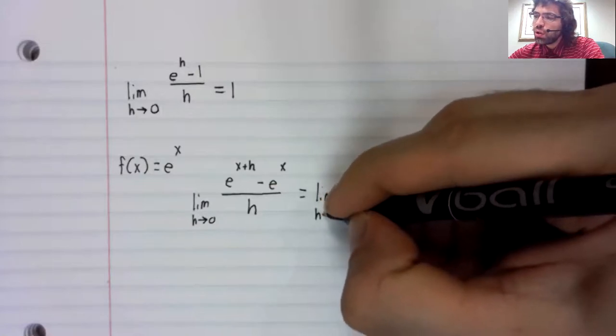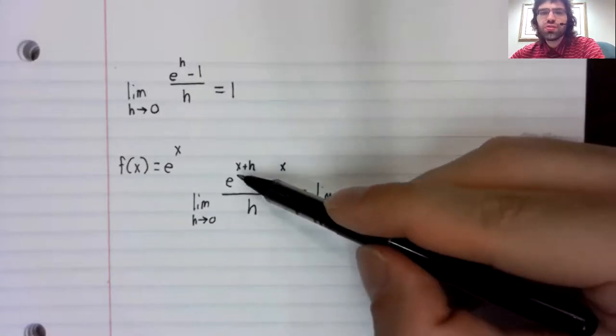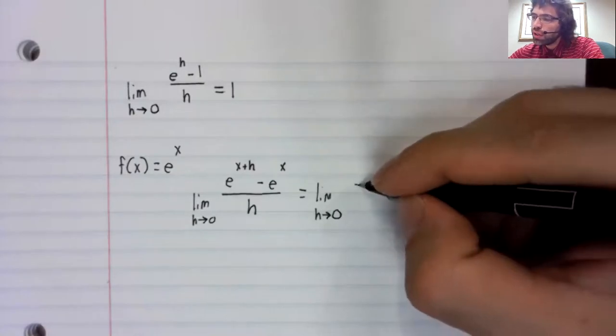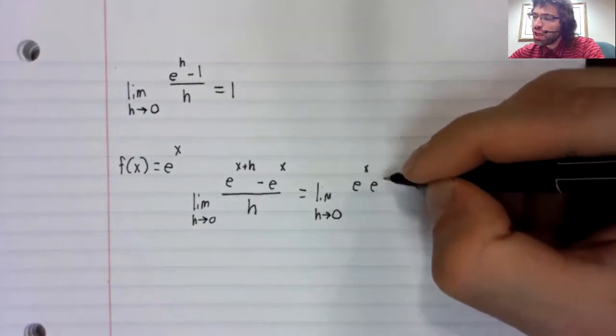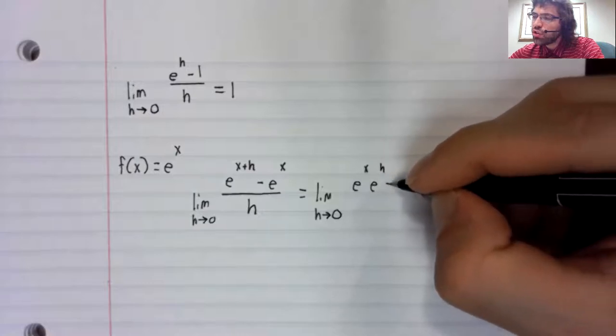We'll rewrite this power. It's e to the x times e to the h.